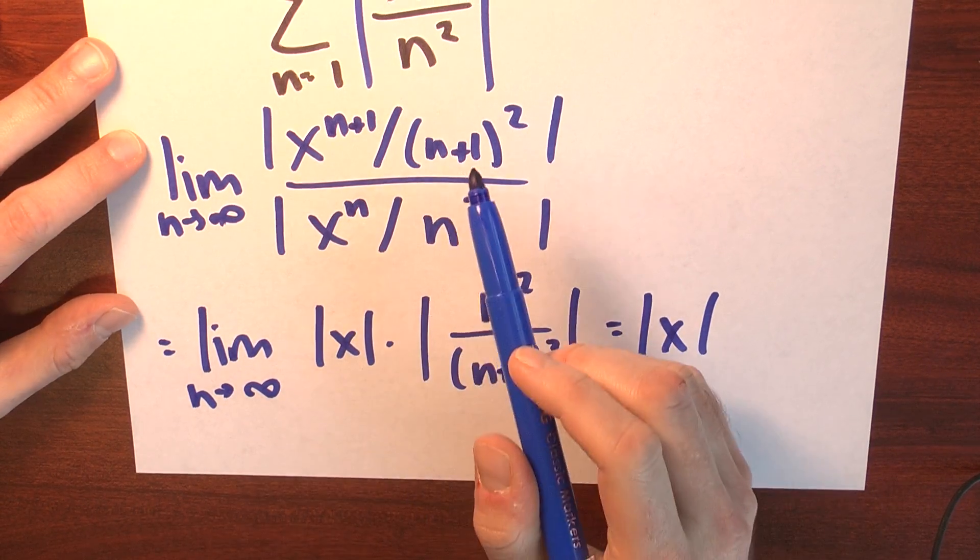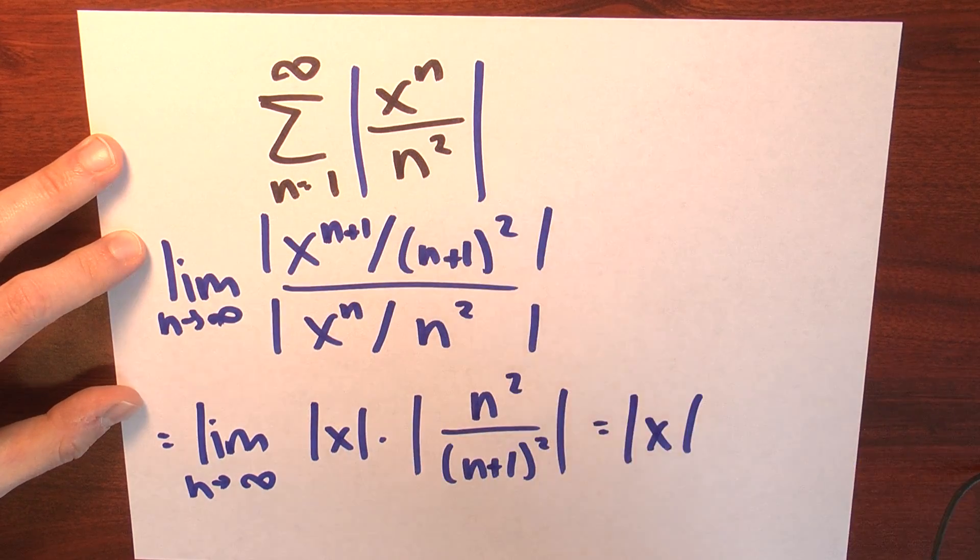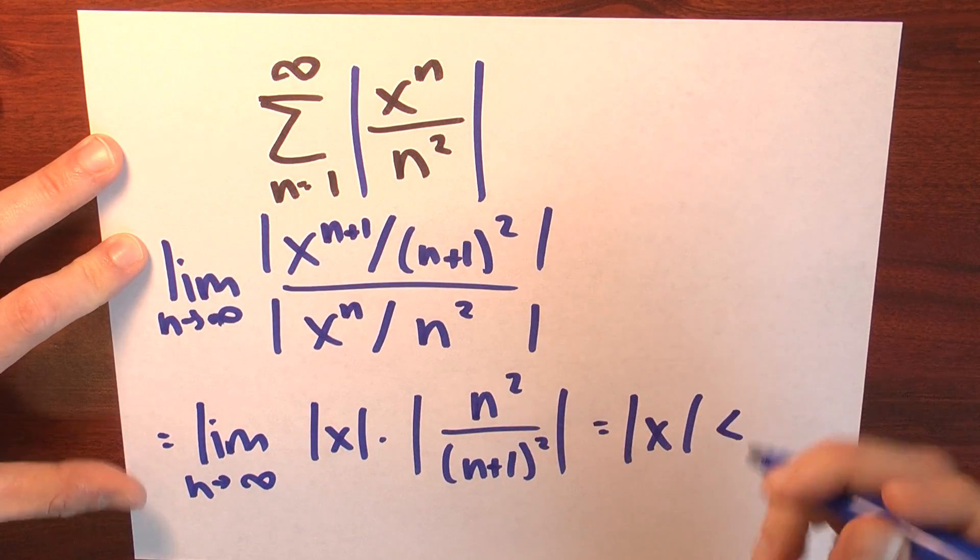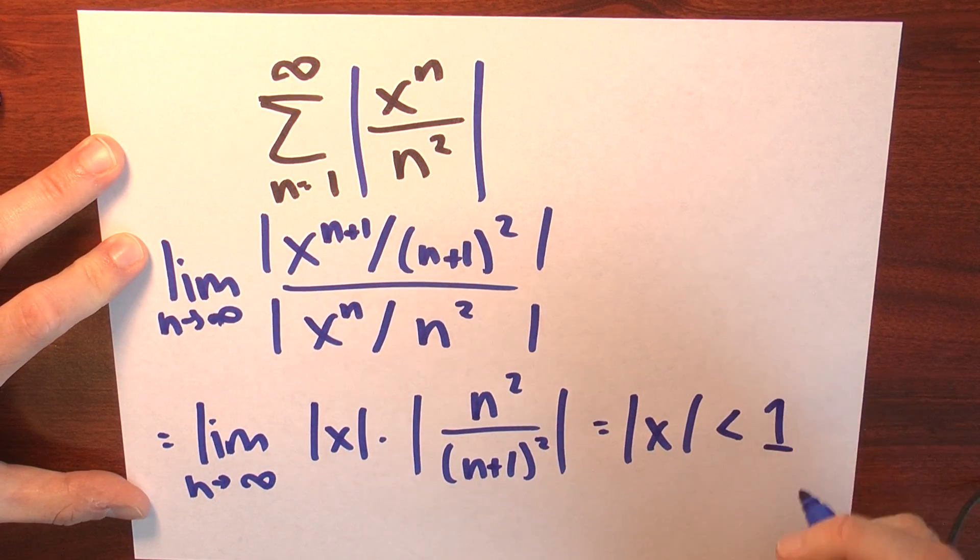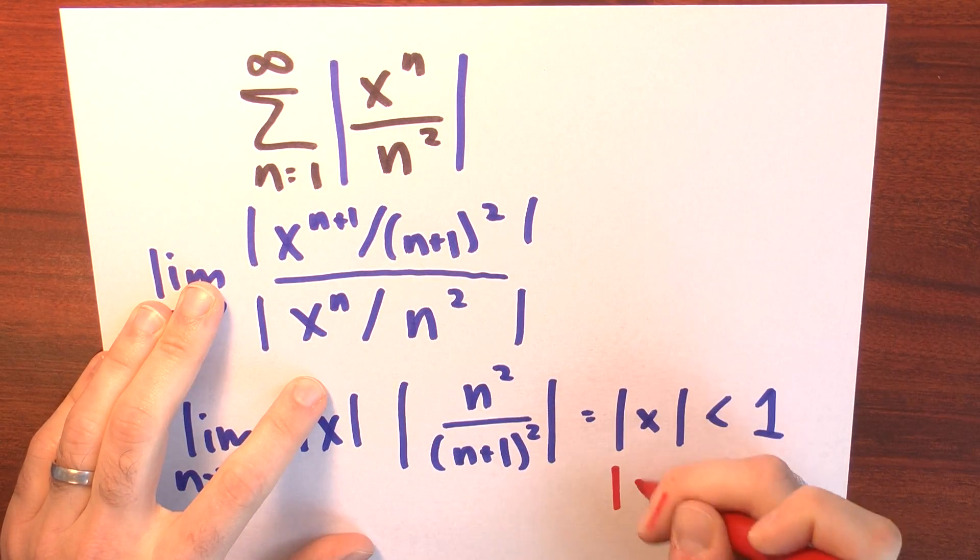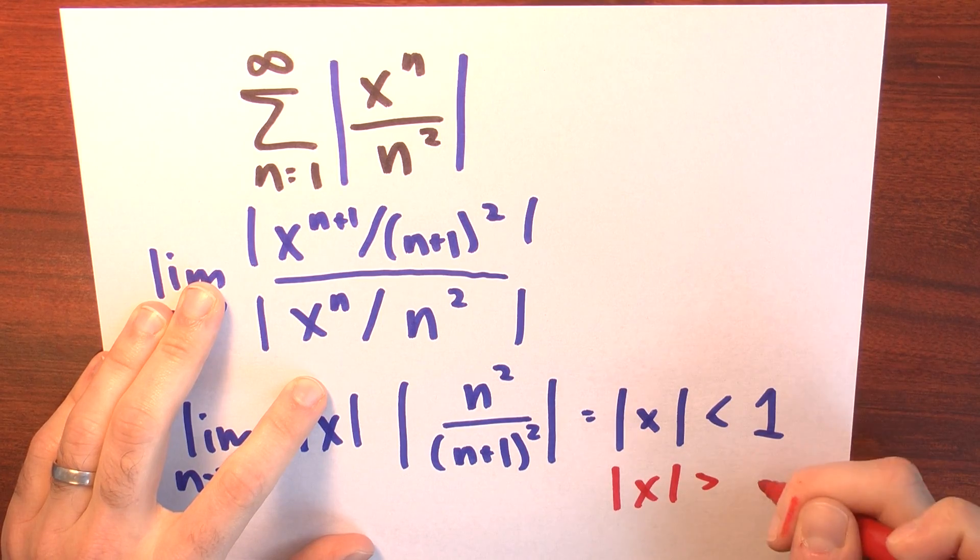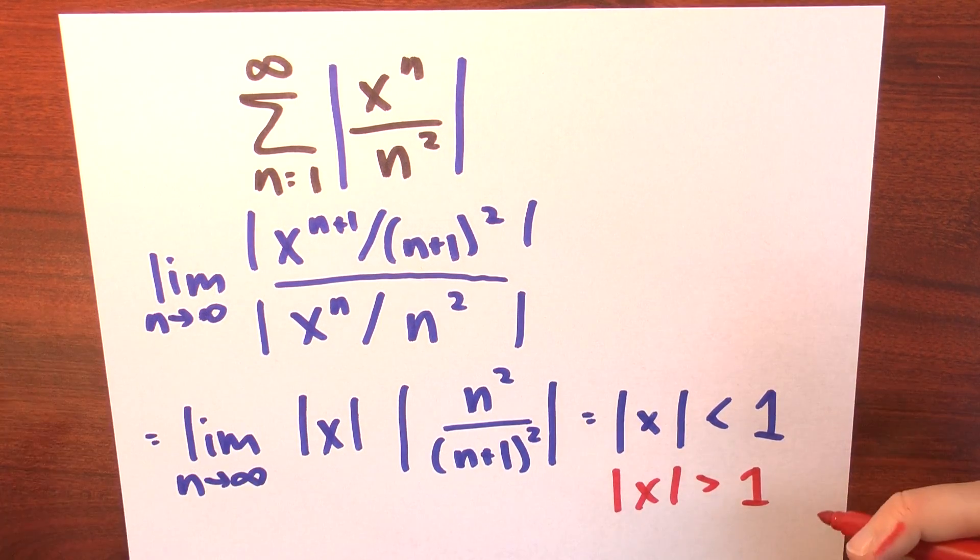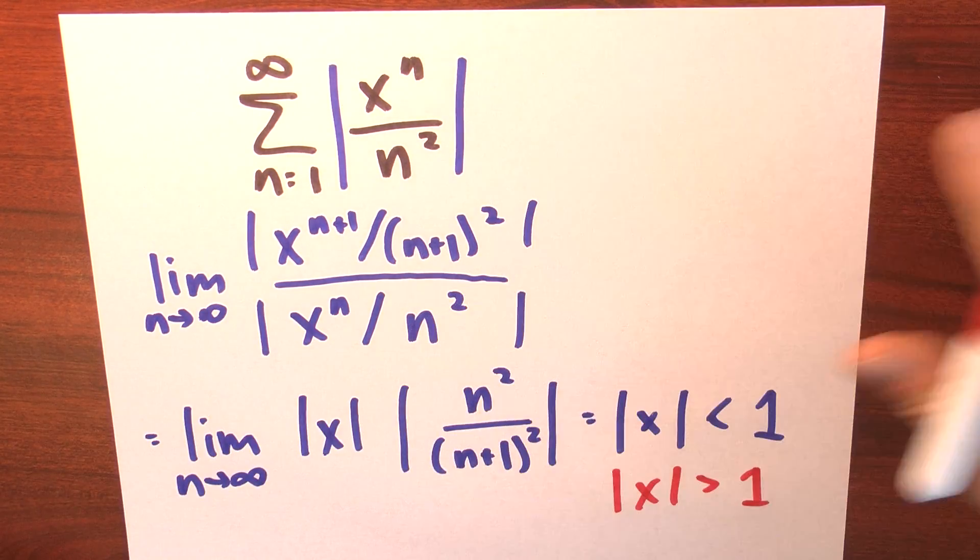To get absolute convergence of this series, it's enough for the ratio test that this be less than 1. But I also know something about when the series diverges. By the ratio test, when this limit, which is the absolute value of x, when that limit is bigger than 1, then this series diverges.